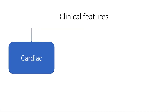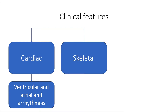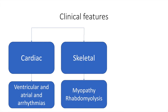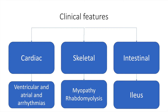The clinical features of hypokalemia may be cardiac — the patient can have atrial or ventricular arrhythmias. The patient can have skeletal manifestations in the form of myopathy or rhabdomyolysis, and finally the patient can have a gastrointestinal manifestation in the form of paralytic ileus.